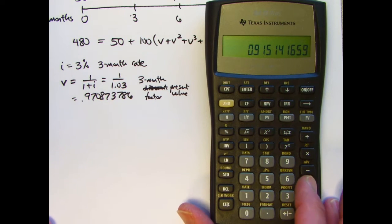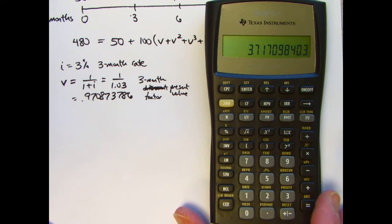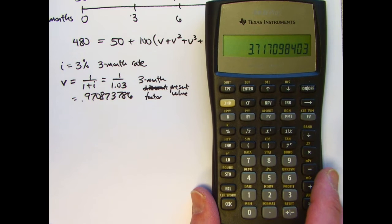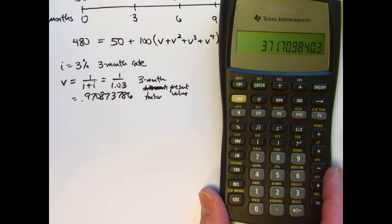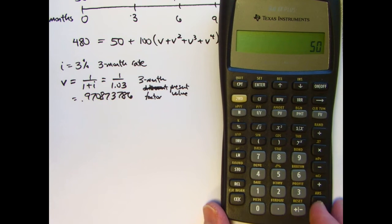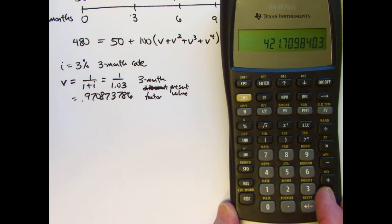That's the sum. V plus V squared plus V to the third plus V to the fourth. Multiply that by 100. And then add 50. So what I have here, this equation becomes...